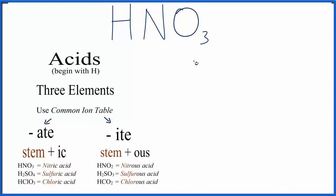So we have this NO3 group here. It's a polyatomic ion that's attached to the hydrogen. So we need to look this up on a common ion table to figure out how to name the compound.